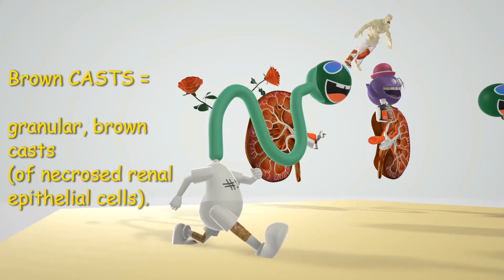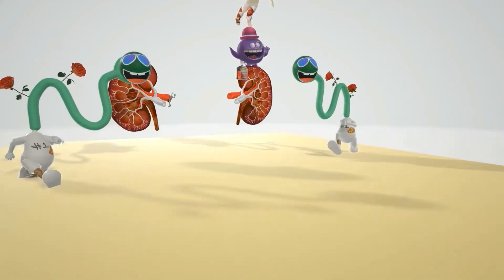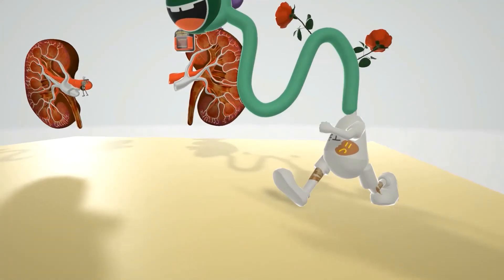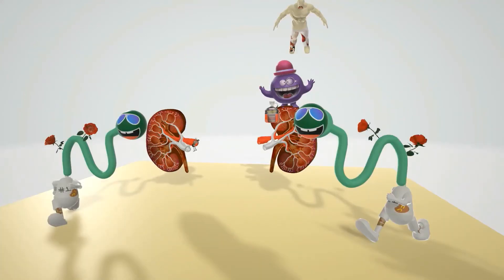He has brown casts on his legs to help us remember the granular brown casts seen on histology in acute tubular necrosis. As renal epithelial cells die — that's what necrosis means — they get mushed together and casted in the shape of the tubule, forming granular casts that appear brown due to the necrosis.